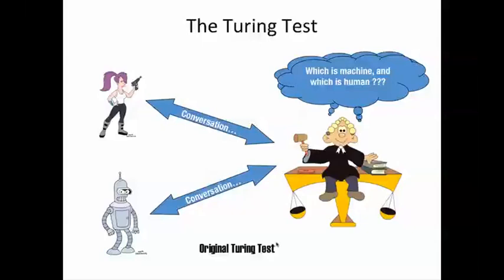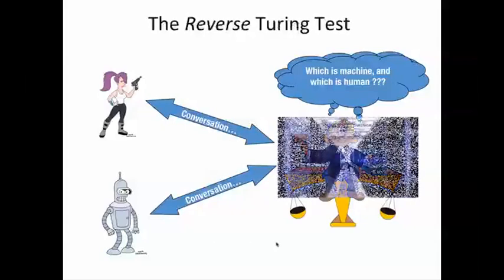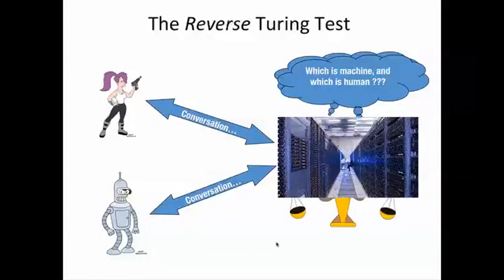An interesting variation of the Turing test is where the judge is now a machine and needs to figure out which of the parties it's talking to is a human and which is another machine. Now do you think you might have seen or experienced such a reverse Turing test yourselves?